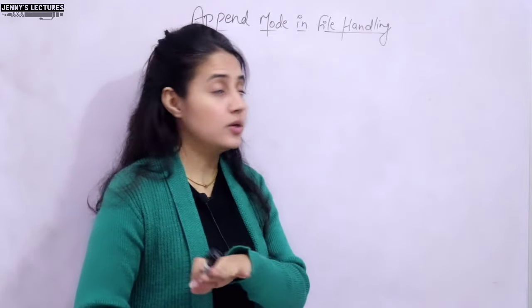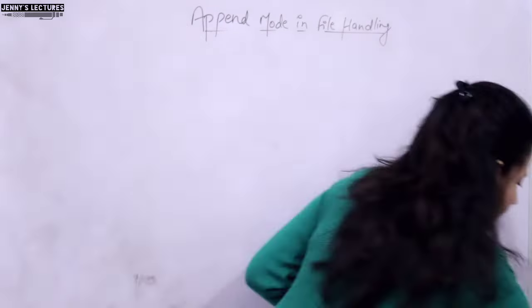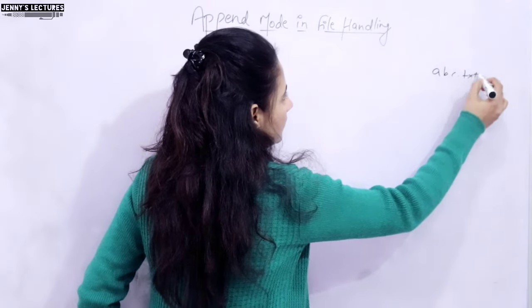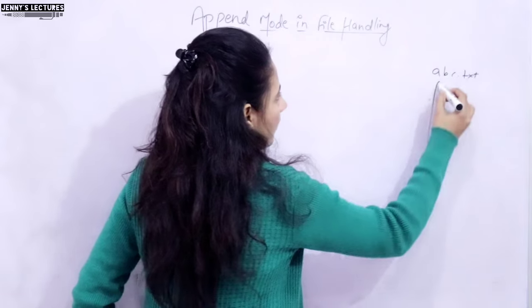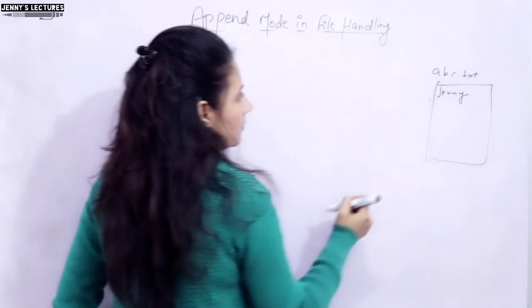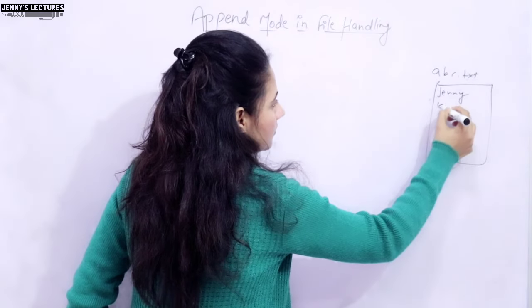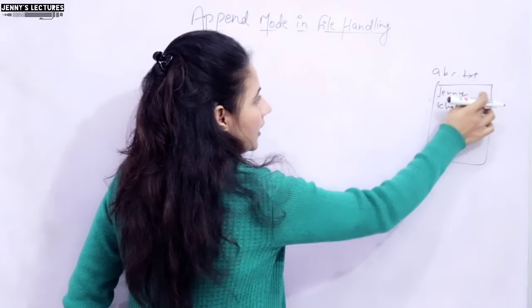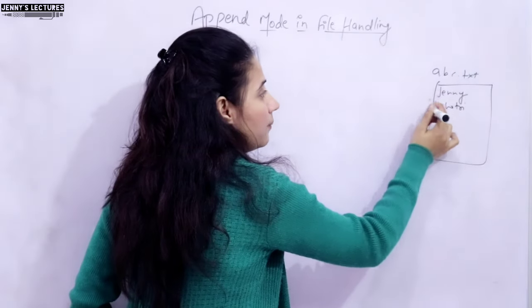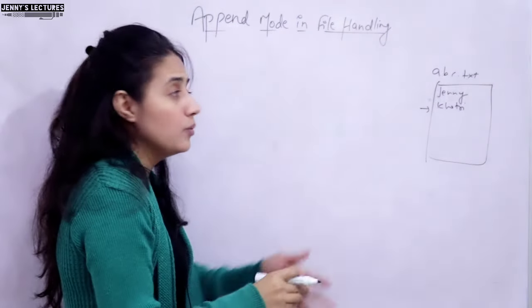Now let's see how to append something to a file. Suppose I have a file called abc.txt, and it already contains the text 'Jenny'. I want to add 'Khatri' — either on the same line or a new line, it's up to you. To append this, we first open the file in append mode.